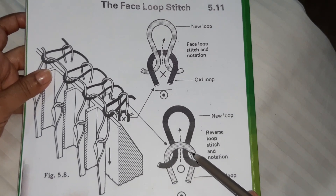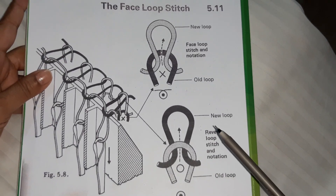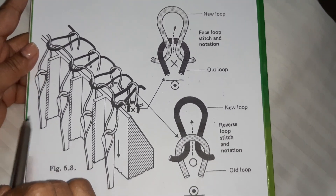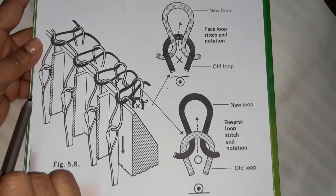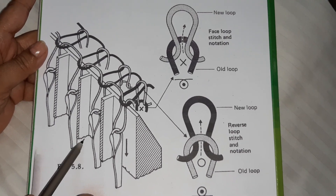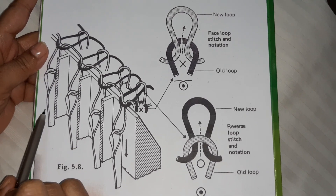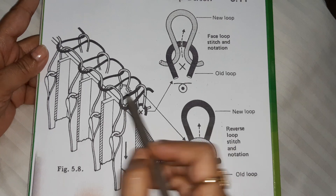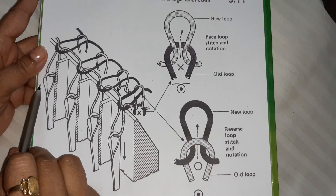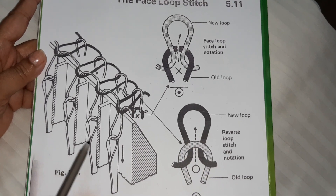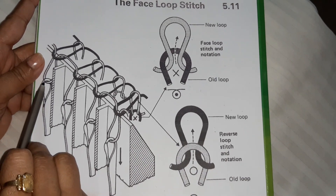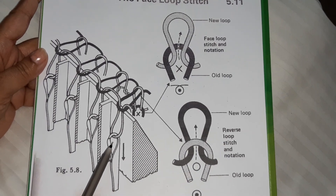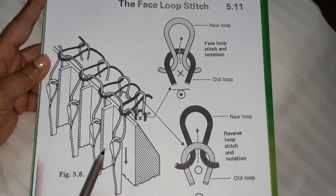In the last class I had explained a latch needle. If you see a latch needle, the latch needles are all in one row, which means that the loops are also going to be pulled in only one row.